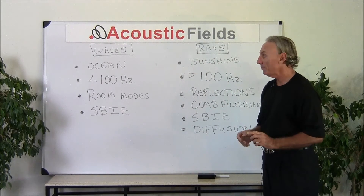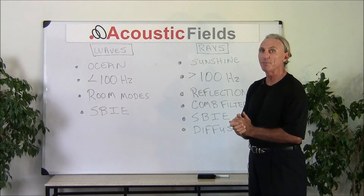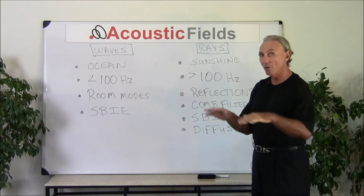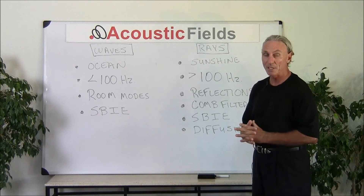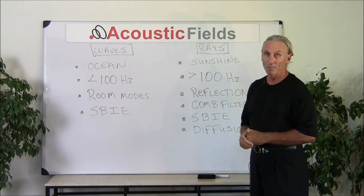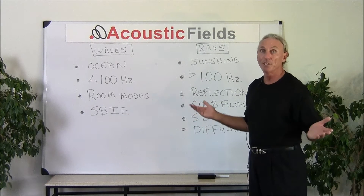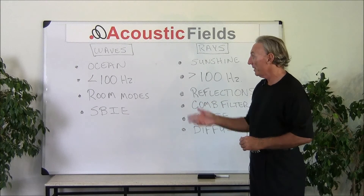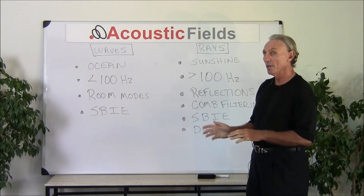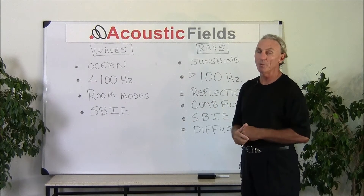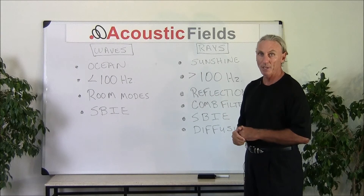Waves — just like ocean waves. For purposes of this discussion, we'll call it any frequency below 100 cycles, because they're longer wavelengths. That would be around 11.3 feet for a 100-cycle wave, so it's long. It may not fit into our room — if our room is 6 feet wide, obviously it's not going to fit. So any frequency below 100 cycles: think like ocean waves — more powerful, more forceful, more energy.